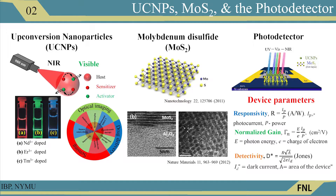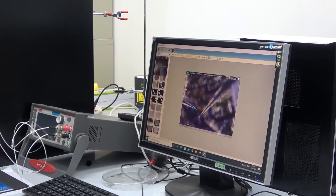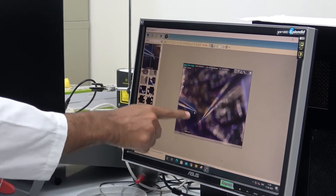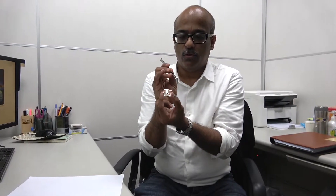The upconversion nanoparticles were electrostatically attached to the molybdenum disulfide. When we shine light on it, the light is absorbed by the UCNPs — the upconversion nanoparticles — and the charges produced are transported through the molybdenum disulfide to the contacts to produce the current.